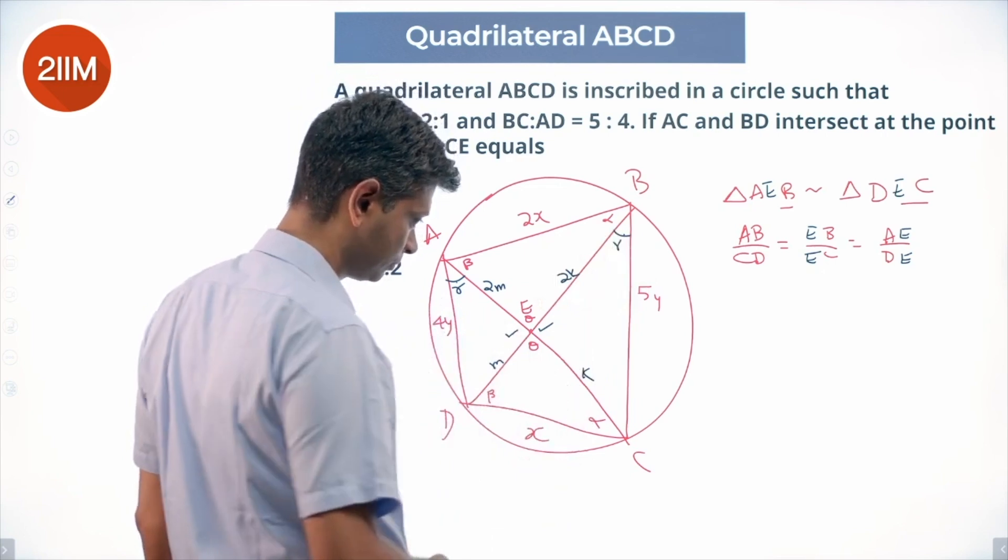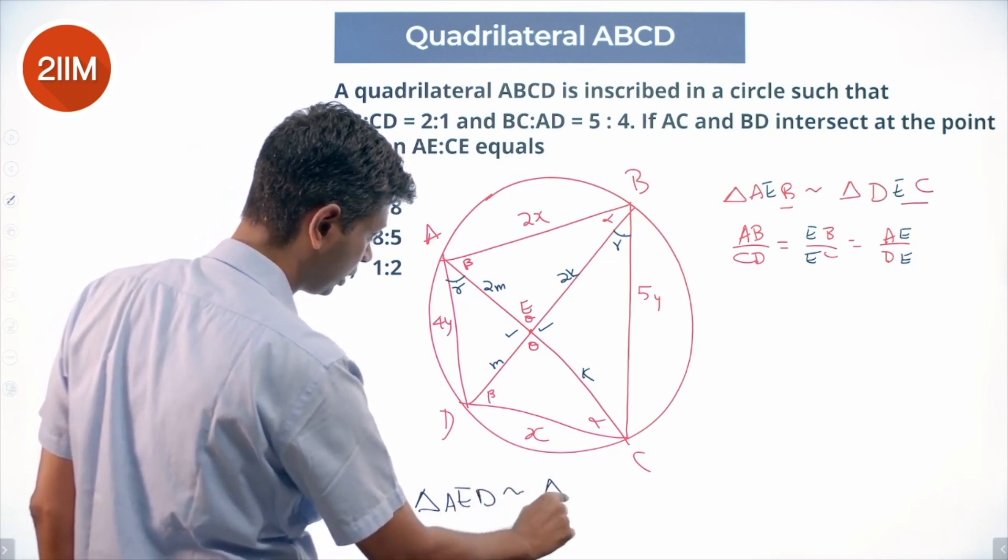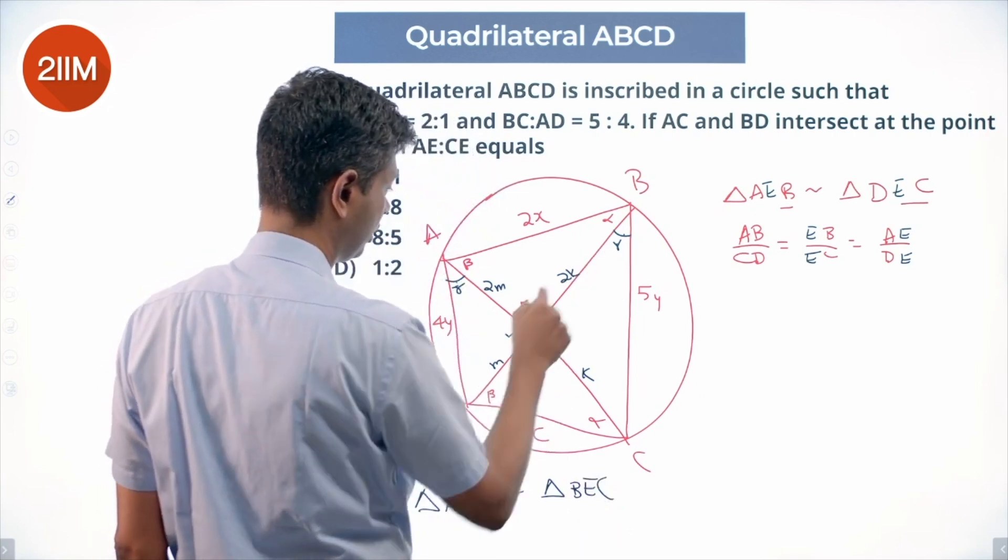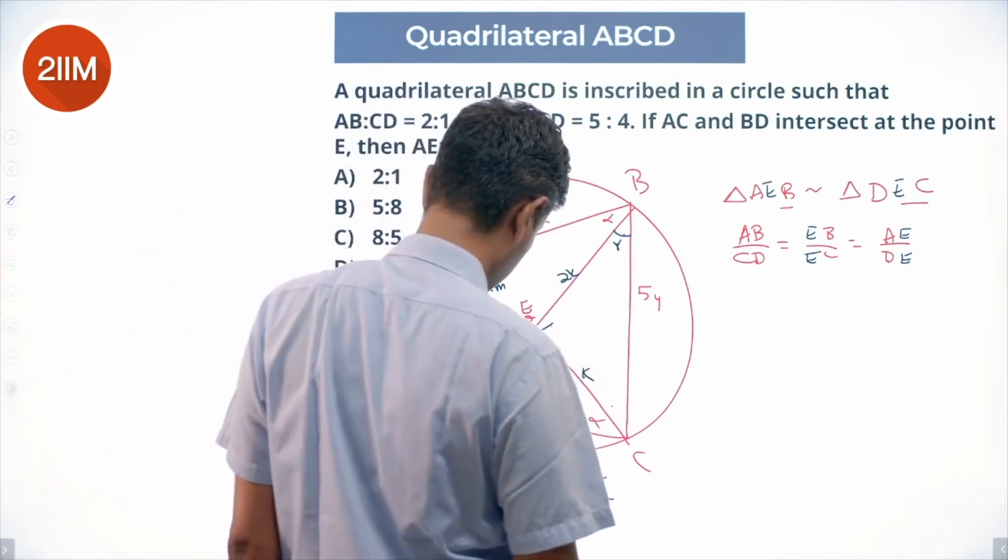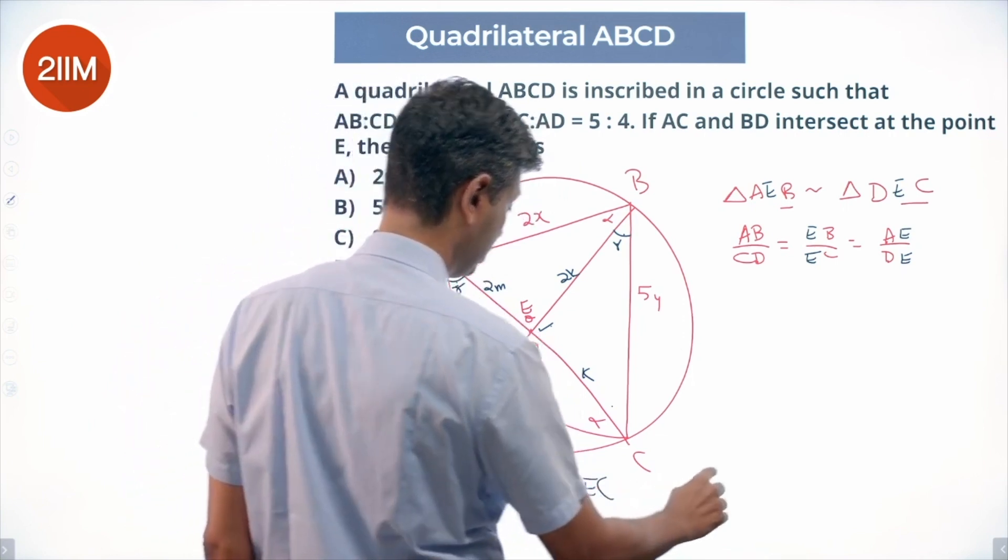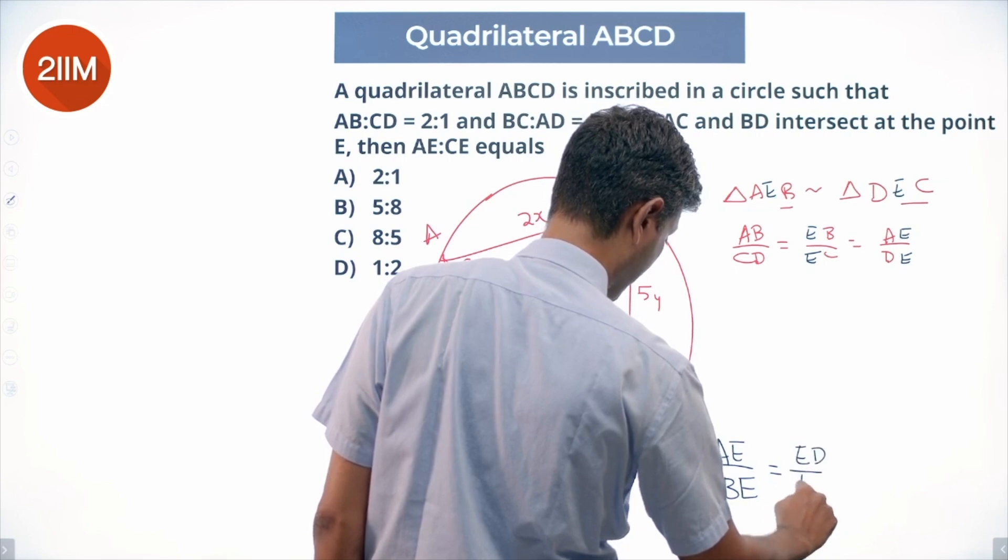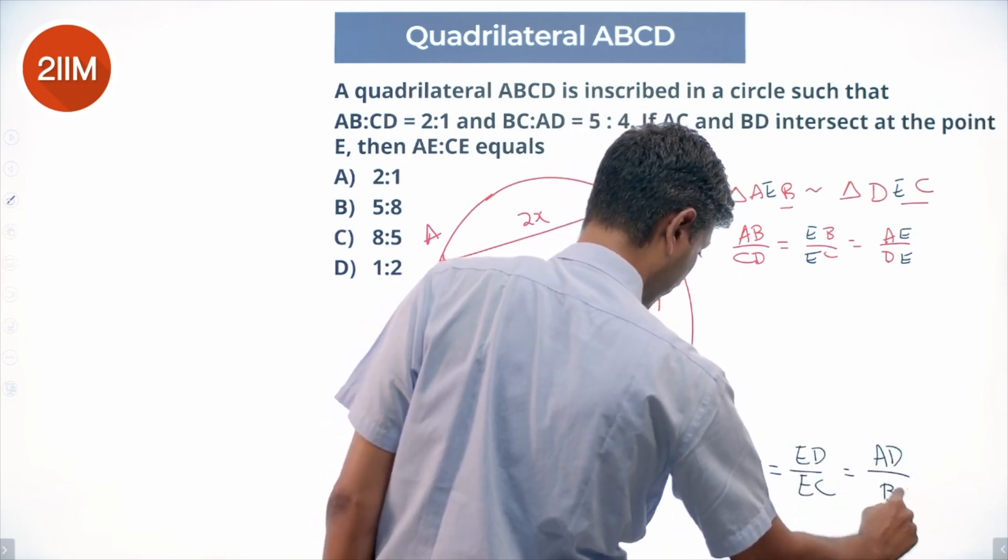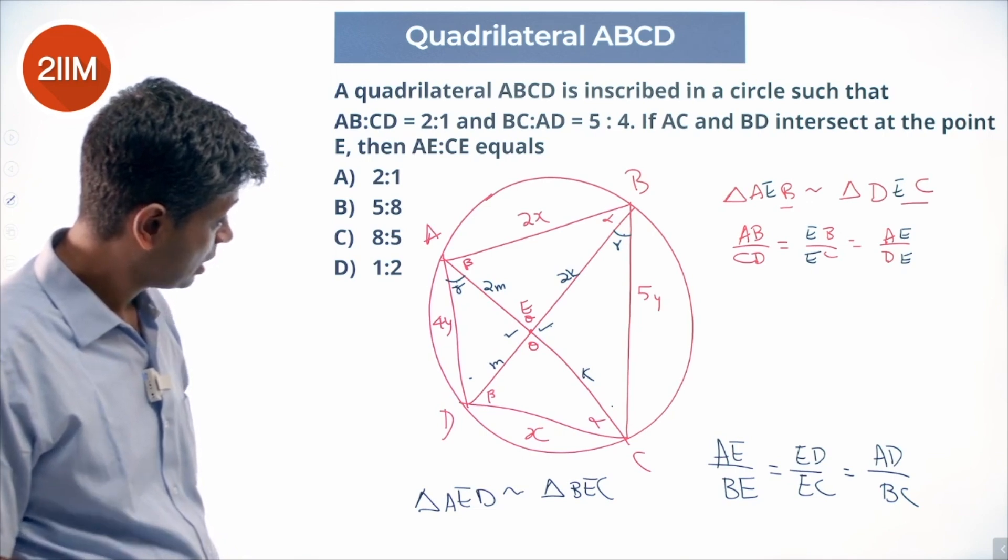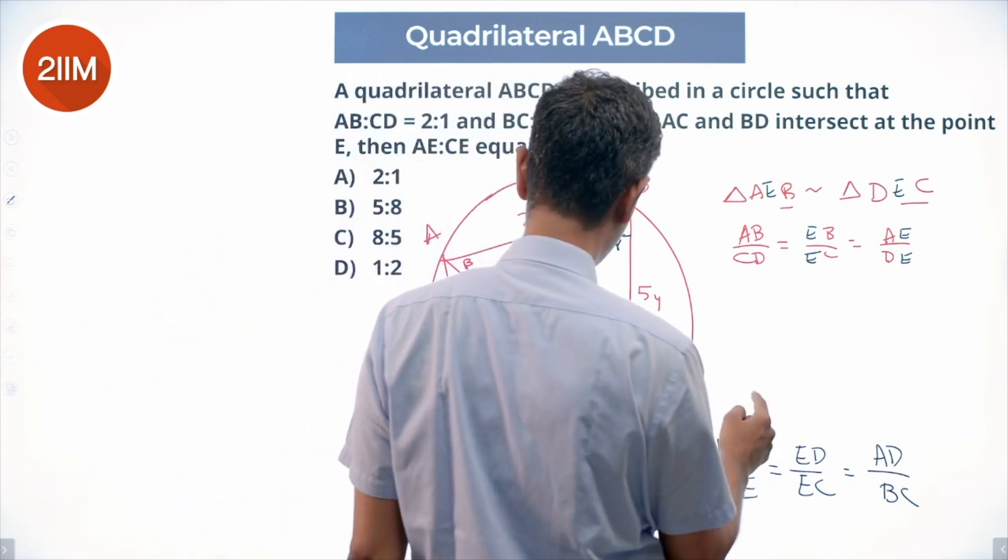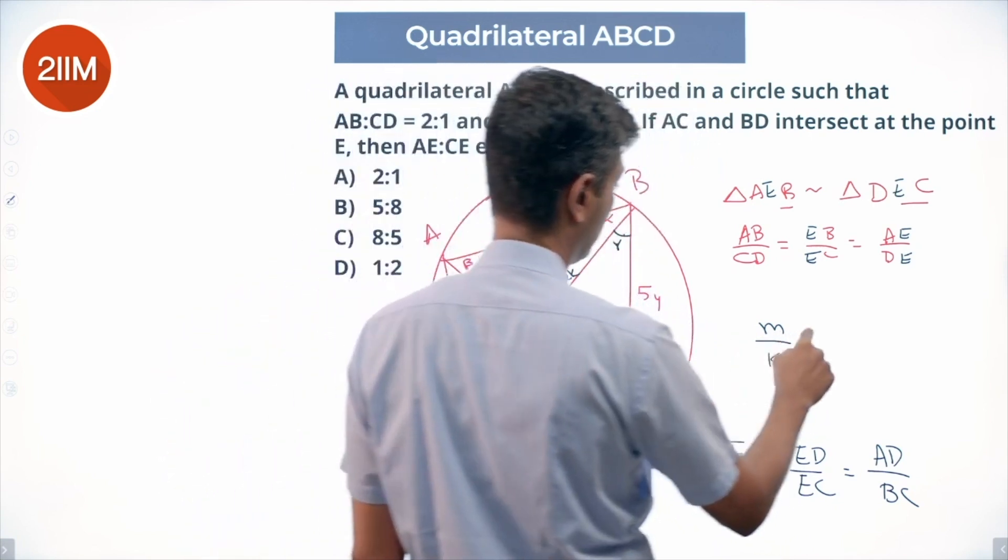This angle should be gamma. So we can say triangle AED is similar to triangle BEC. These two angles are equal, these two are equal, so these two will automatically be equal. Therefore, AE/BE = ED/EC = AD/BC. Since AD/BC = 4/5, we have ED/EC = M/K = 4/5.